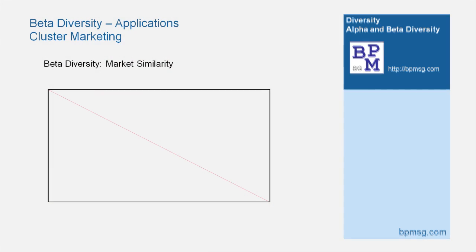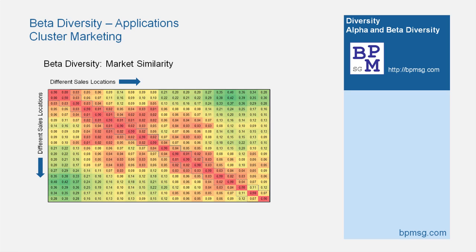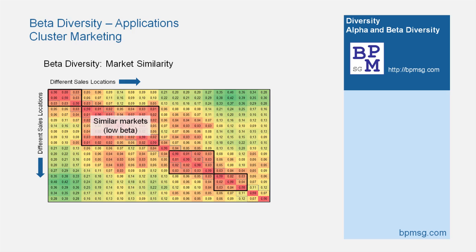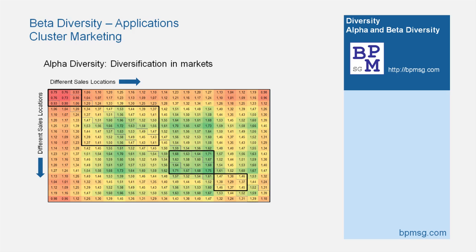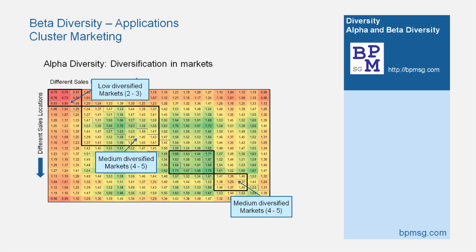Let us have a look at some actual figures coming from a real company. I compared the sales distribution of different product segments at 20 sales locations, and you can easily identify four clusters with low beta diversity and therefore high similarity of the markets. Changing to alpha diversity, we see that the first cluster represents a low diversified market, the second and fourth a medium diversified market, and the third a well diversified market.